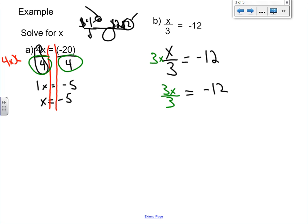3 divided by 3 is just 1, so that's just x, and negative 12 times 3 is going to be negative 36. And we get our answer. You can see our equal sign is still straight down the middle. We'll do a couple more examples.